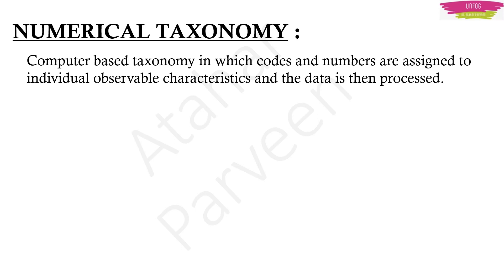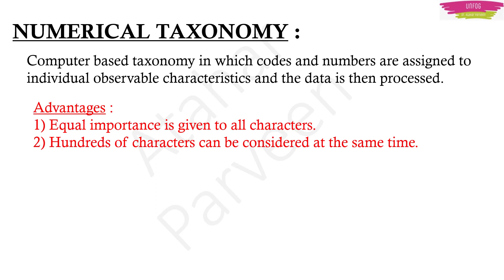Next we have numerical taxonomy. In numerical taxonomy, we take observable characteristics, assign codes and numbers to them, and then process this data in computers — so it is a computer-based taxonomy. The advantage is that it gives equal importance to all characters, both sexual and vegetative. It also allows you to compare many characters at the same time, making it a time saver.